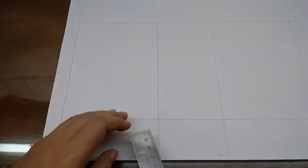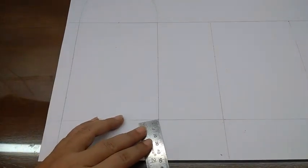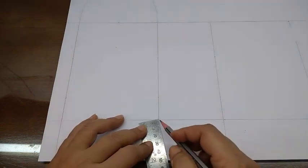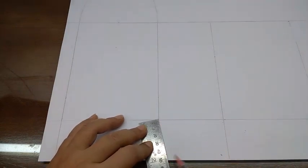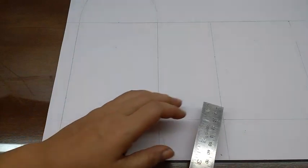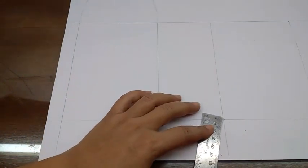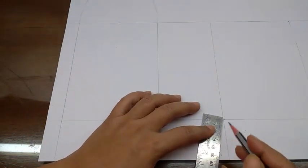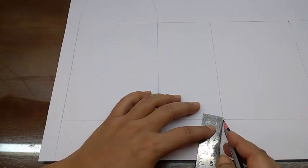Now on the lower side, on the narrow rectangles, just make lines at an angle, at a slant, on both sides. And similarly on this one also.